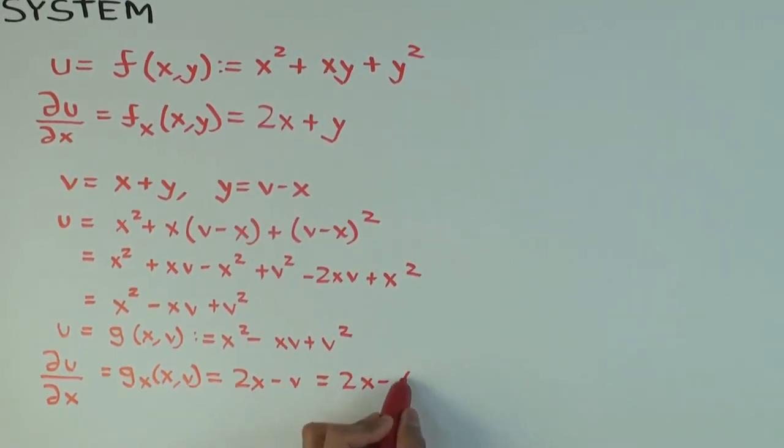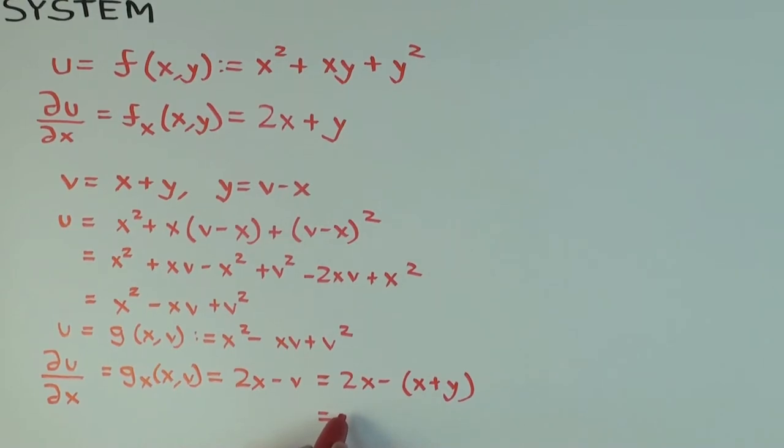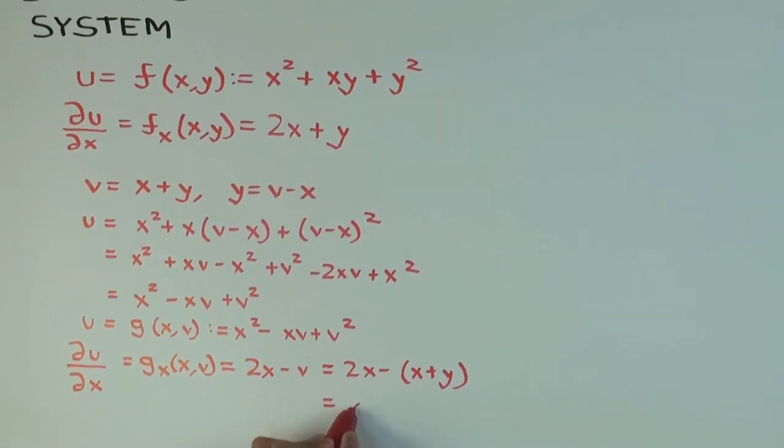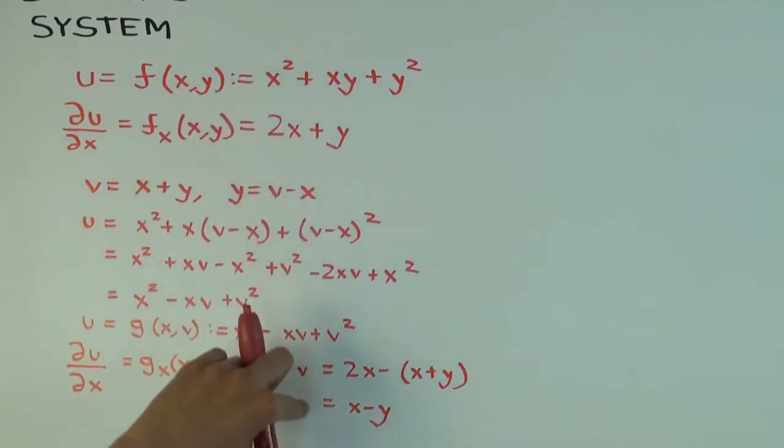Minus, sorry, v is x plus y, right? So what does that become? x minus y. That becomes x minus y. So now we have both our answers in terms of x and y. Are they the same? No.